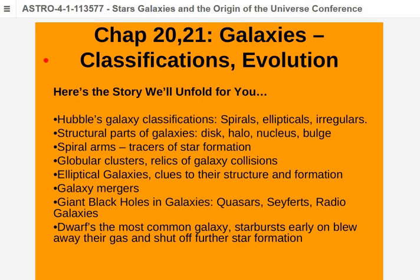Once we realized Andromeda was an entirely separate galaxy, we took a new look at our own stellar system. We don't see a super bright central ball of stars like we see in Andromeda, so we guessed maybe we're in the middle — which is why the Milky Way looks fairly uniform around the sky. What we didn't appreciate is that we have a lot of dust in our galaxy, and that dust hides the central bulge, so we couldn't see it.